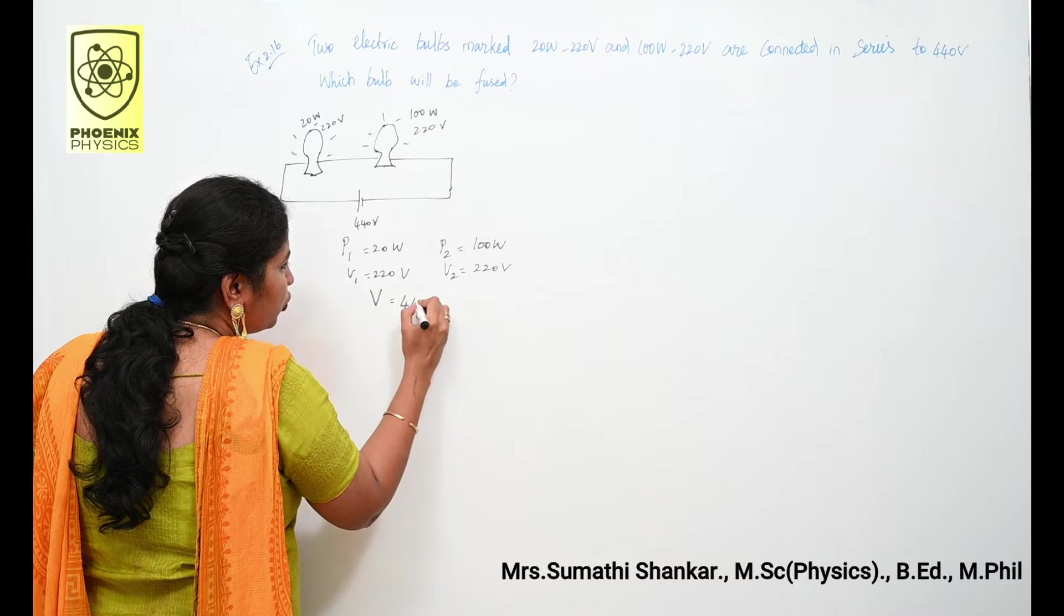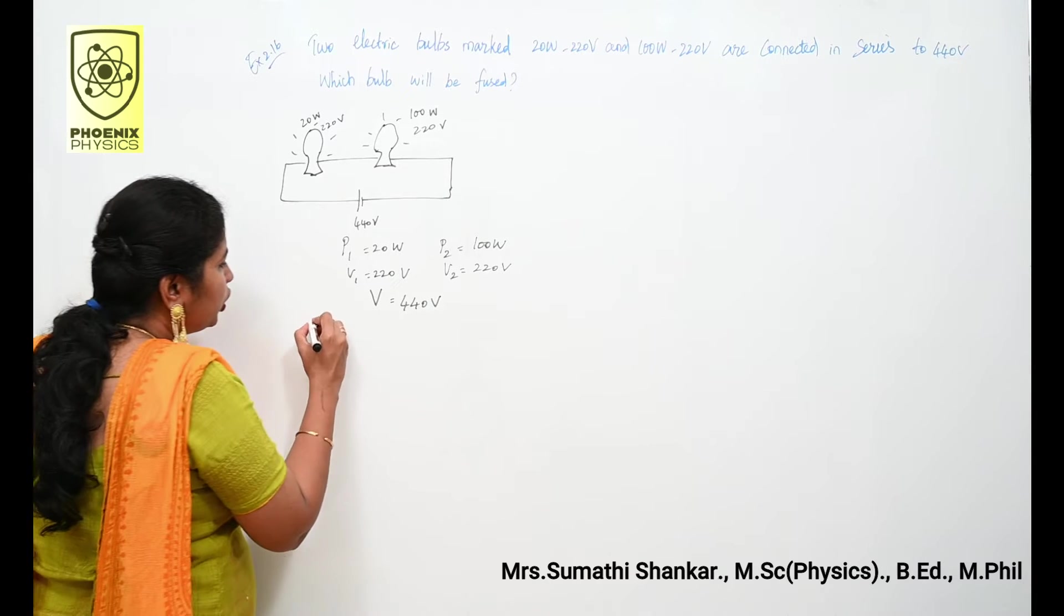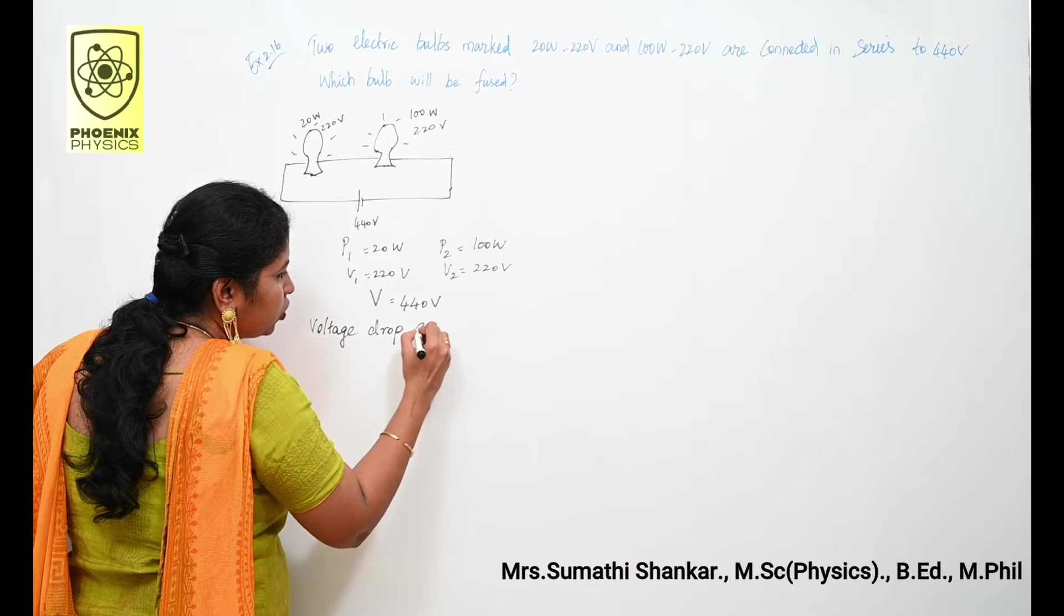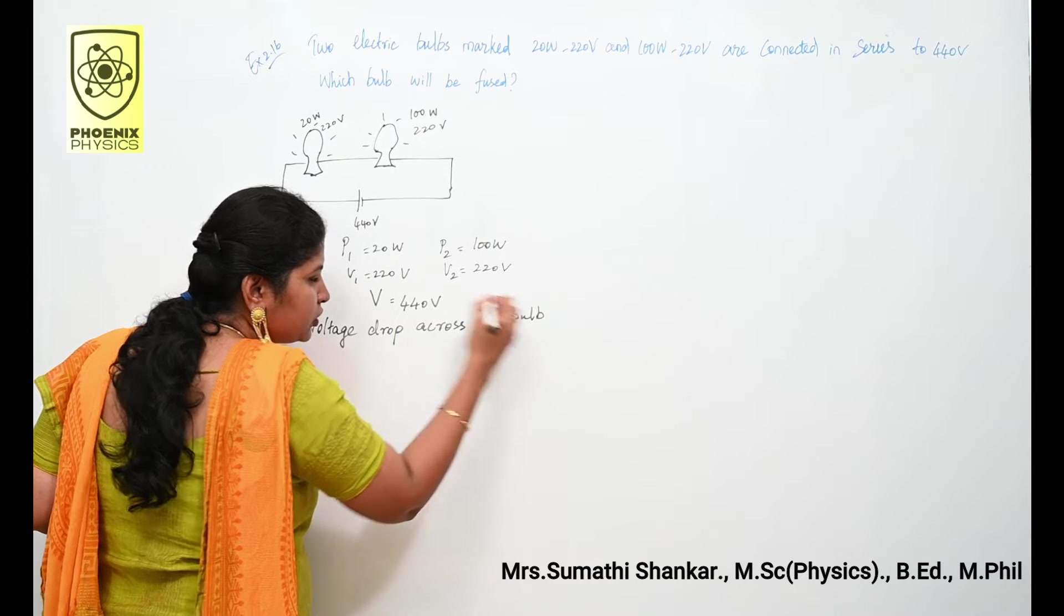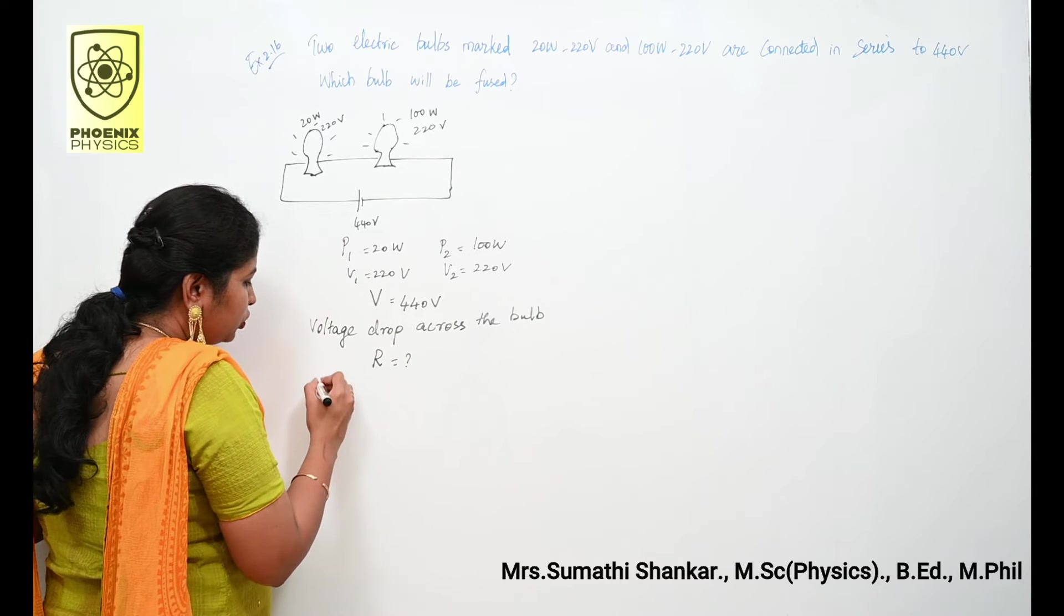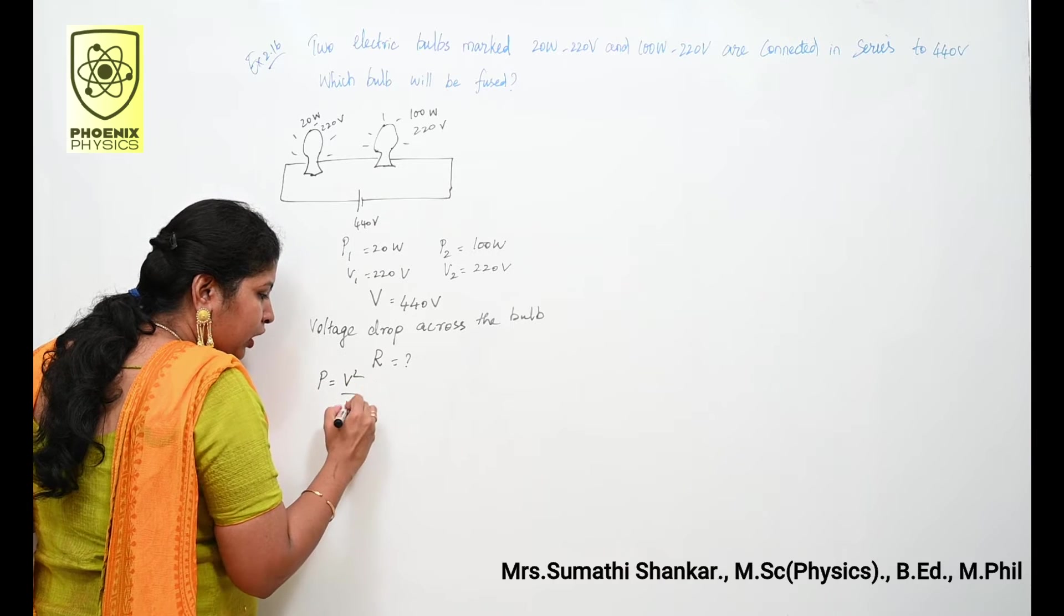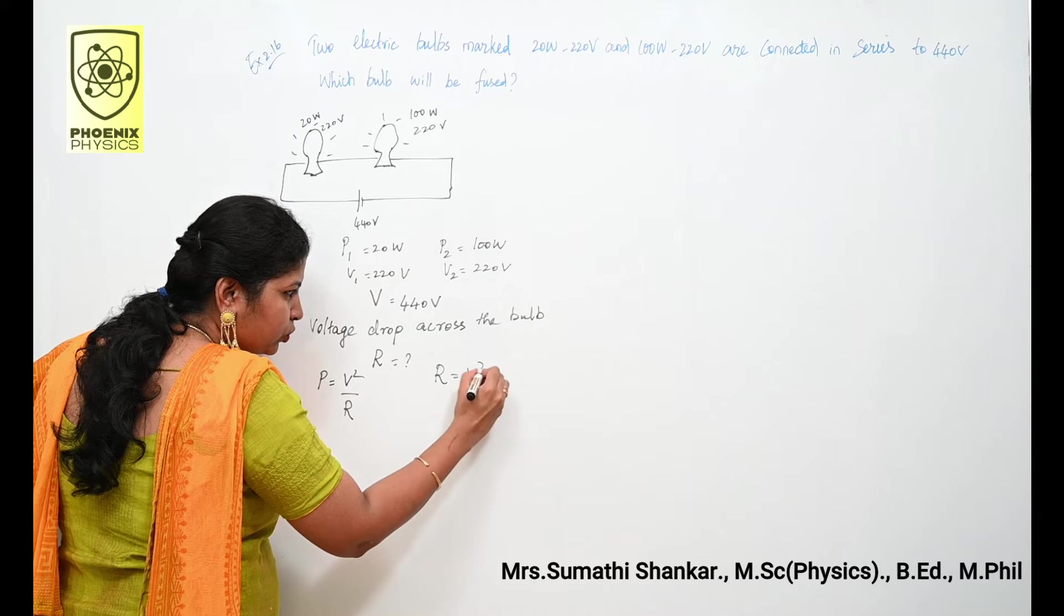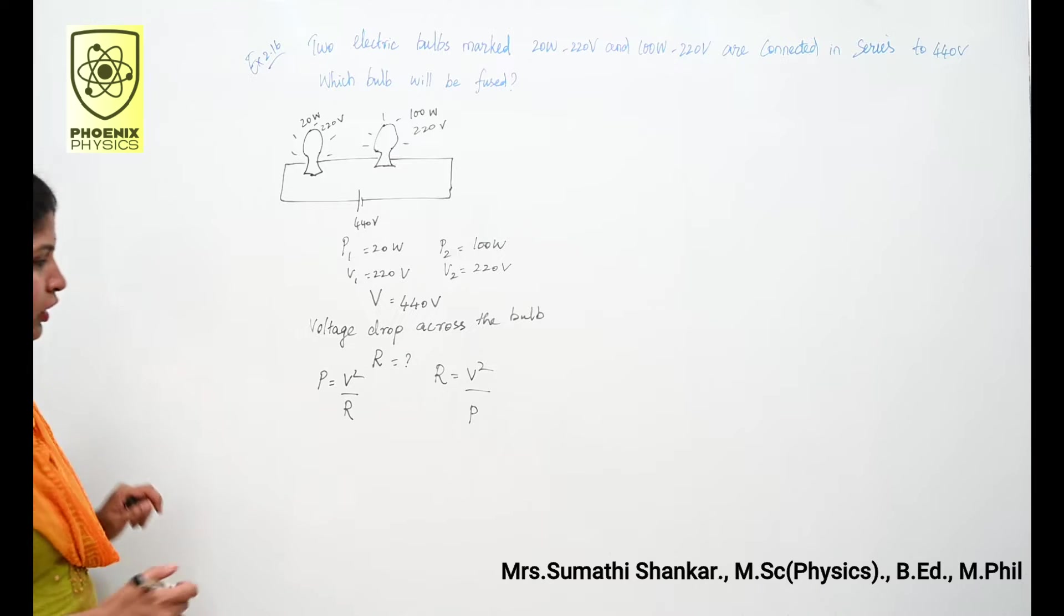Total potential difference V is equal to 440 volt. Our aim is to find out voltage drop across the bulb. For this we need resistance. You know the formula P is equal to V square by R. I need resistance, so R is equal to V square by P. This is the general formula.